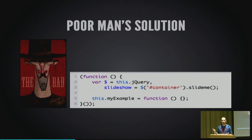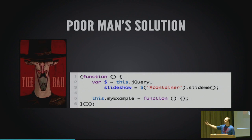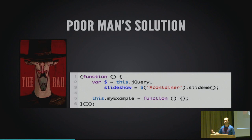People try to solve the global namespace problem using anonymous functions — anything inside won't pollute the global namespace. But this still doesn't solve dependency management. How do you know inside your anonymous function that jQuery is loaded, or that the slideshow is available? You just have to hope developers included the library manually before this script was called. The anonymous function protects the namespace but doesn't handle dependency management.